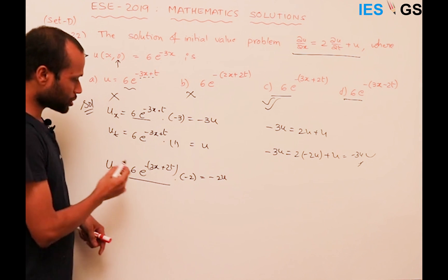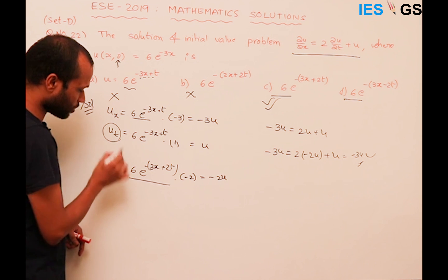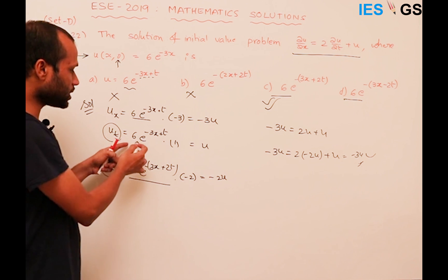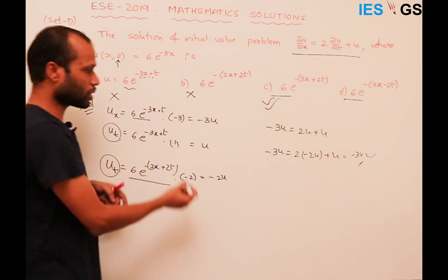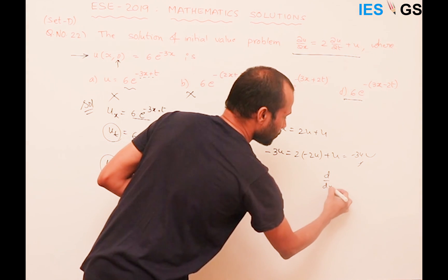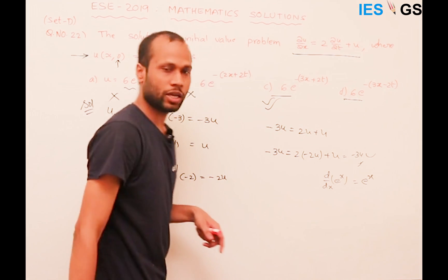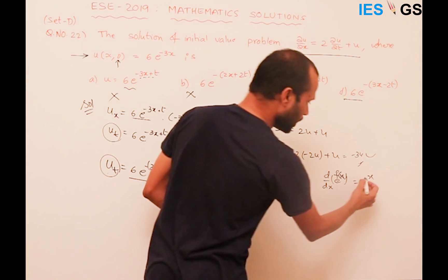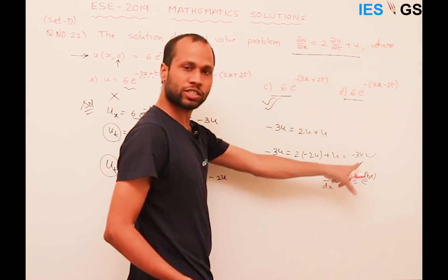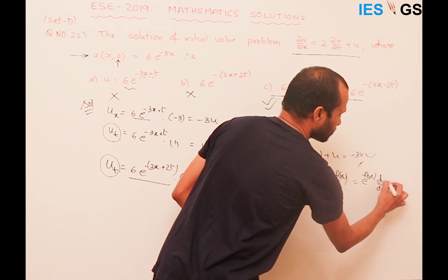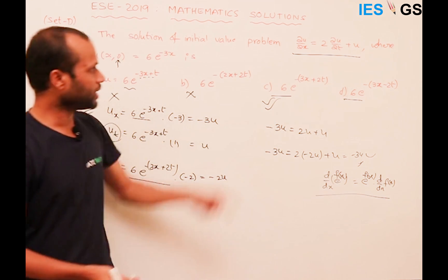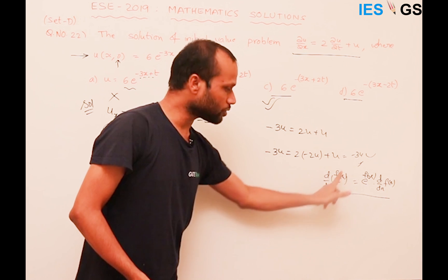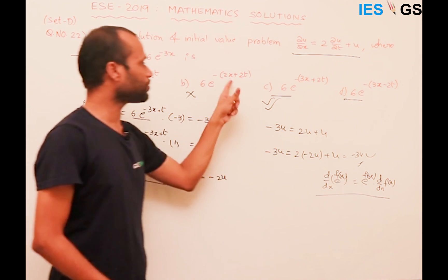I hope you understood. What I am doing while differentiating is applying the chain rule. This is of the e^(f(x)) form. The rule is: d/dx of e^(f(x)) = e^(f(x)) · d/dx of f(x). Similarly, when computing ∂u/∂t of e^(f(x,t)), it equals e^(f(x,t)) · ∂/∂t of f(x,t).